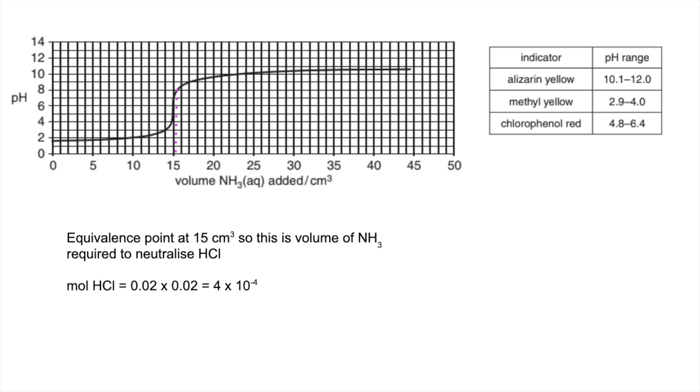Now we'll just run through the calculation. Moles of HCl, we knew the concentration and volume, so that's 4 times 10 to the minus 4. It's a one-to-one ratio so the moles of ammonia in that 15 cm cubed is the same. Then turn that into a concentration, moles over volume, and you get 0.0267. Finally in terms of indicator, again we're looking for one that has a pH range in the vertical section. There's only one in this case, it's chlorophenol red.